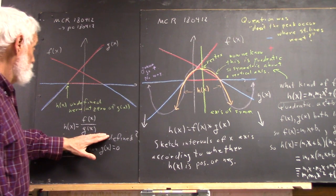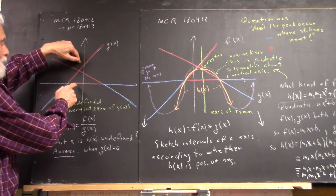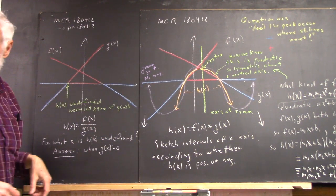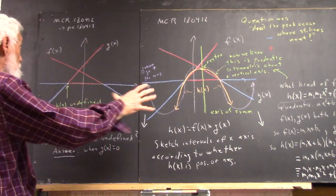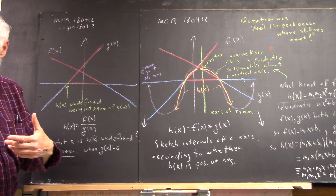Now we know that h of x is going to be positive where the two functions are both positive. It's going to be negative where the two functions have opposite signs.